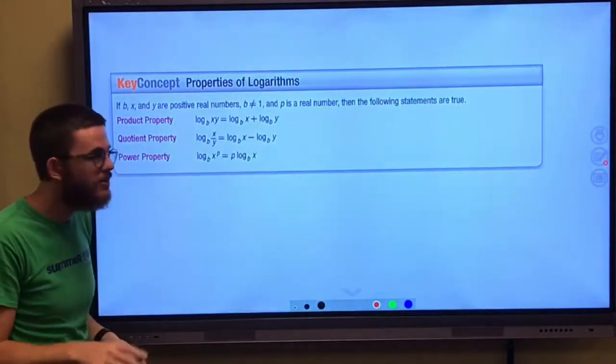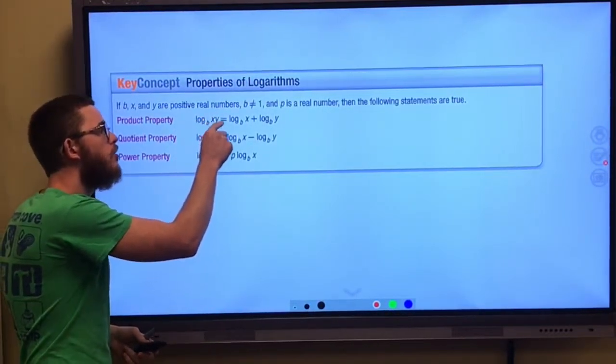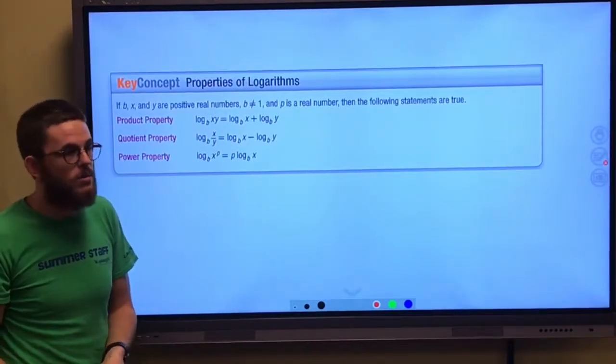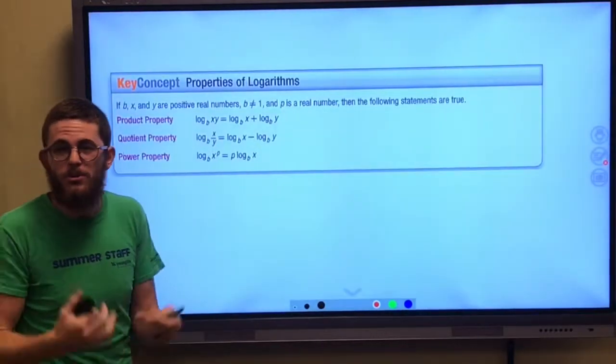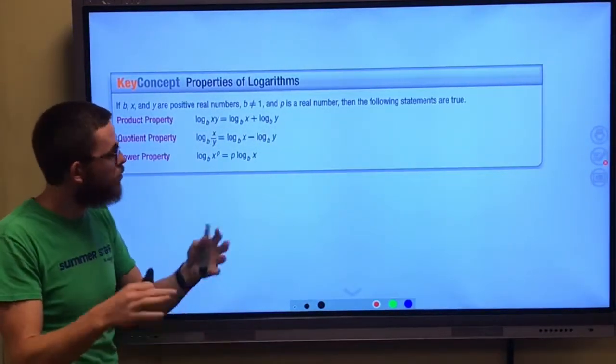The product property simply says if we have the log of two things being multiplied together, maybe 3 and x, maybe x and y like this says, maybe it's a number and we split it up, like 18 would be 3 times 6. Whatever it is,